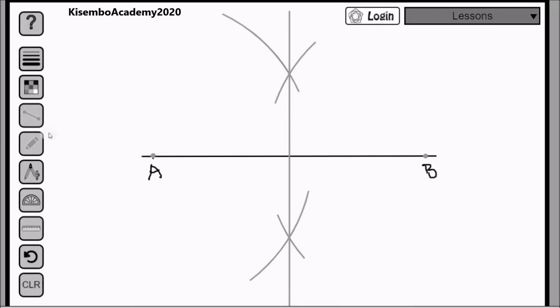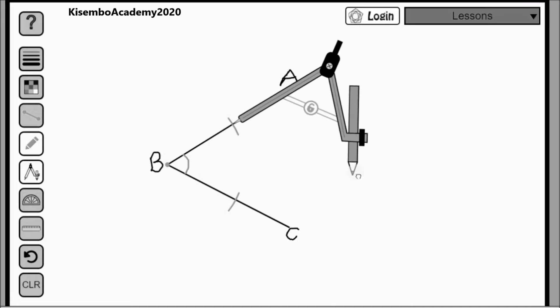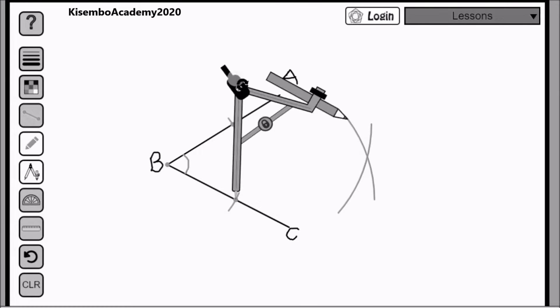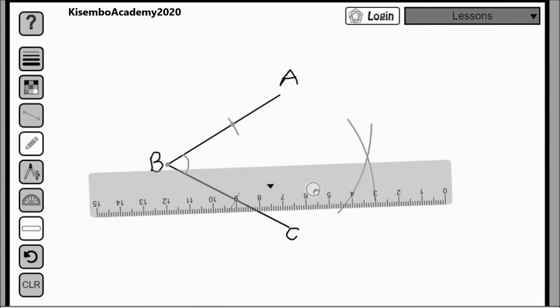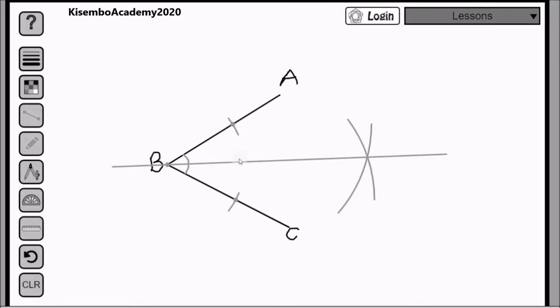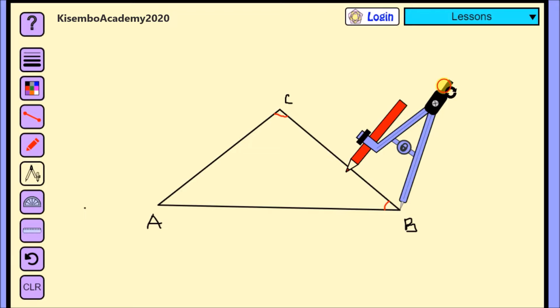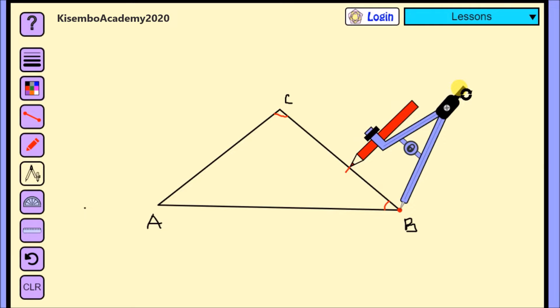So when you are trying to inscribe a circle into a triangle, what we do, we are going to pick any two angles and bisect them. When we get these any two angles and bisect them, the lines that are bisecting where they meet becomes the center of the circle we are trying to draw.